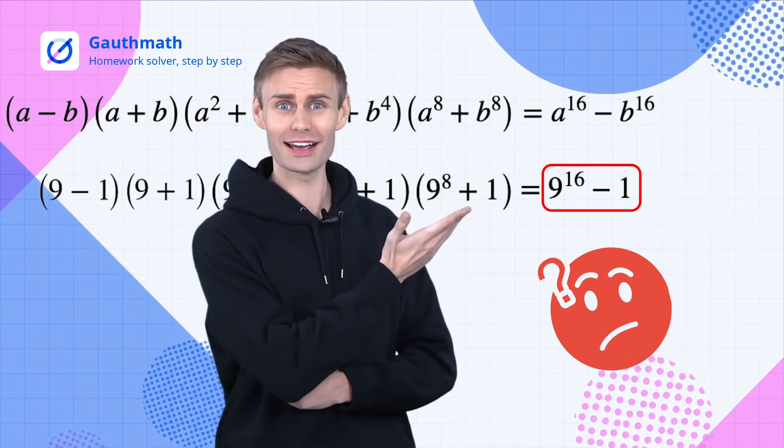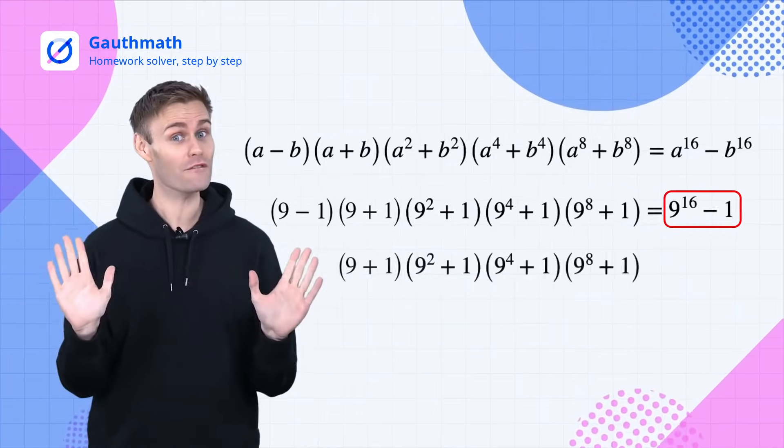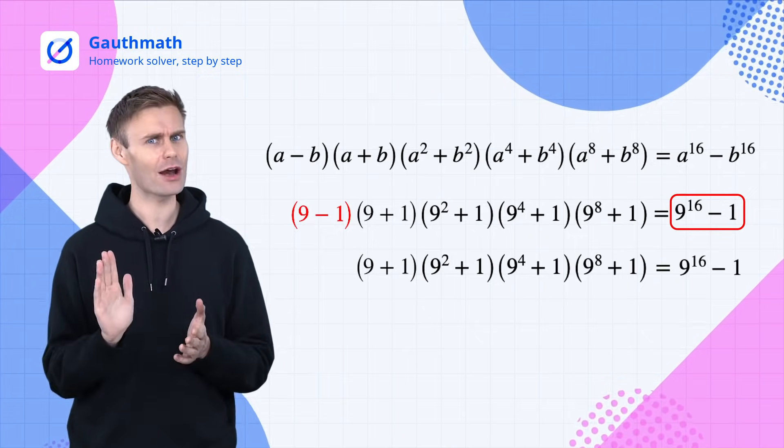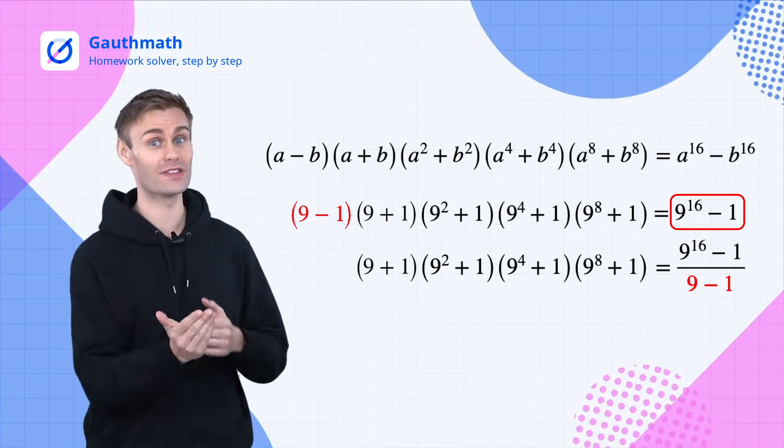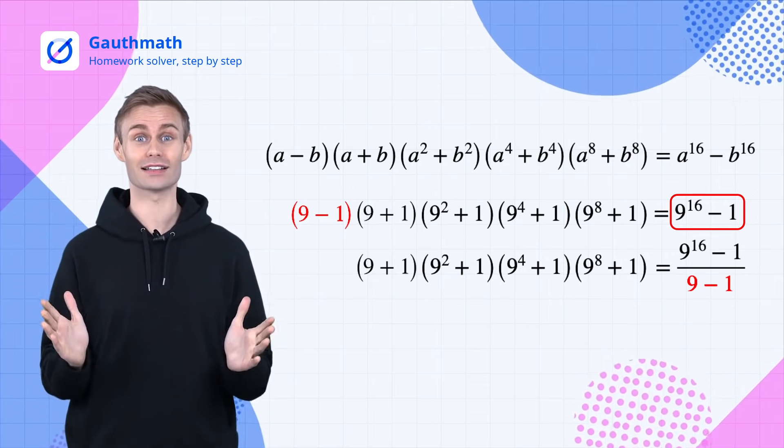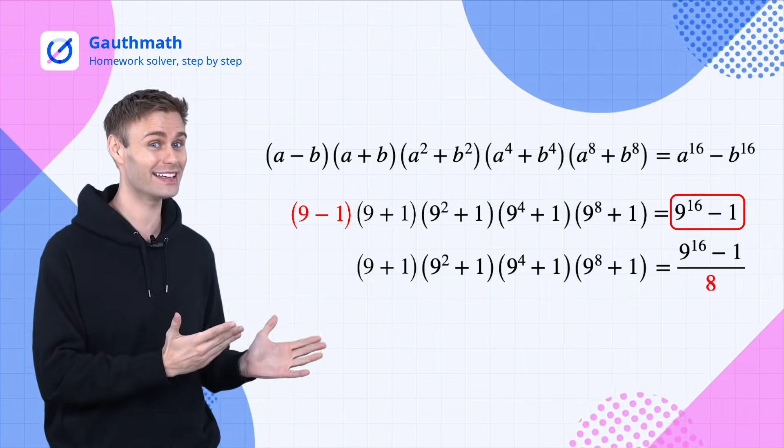Is this the final answer? Whoa wait, don't forget that you've multiplied the expression by nine minus one. To get rid of it you'll have to divide it so that the left and right hand side could be equal. And the final answer is nine to the sixteenth minus one over eight.